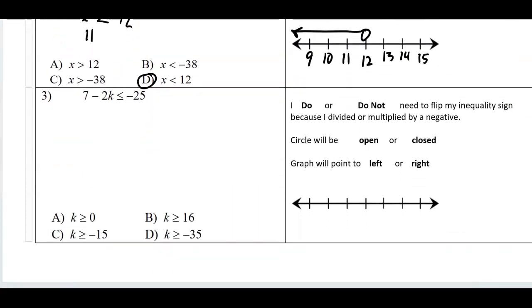Now, let's do one where we flip. Plus a negative. Notice, I have a negative attached to my variable. Pay attention. I'm going to add negative 7 to both sides. That cancels off. I get negative 2k is less than or equal to negative 32. And I divide by negative 2.